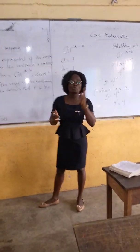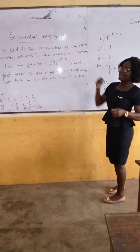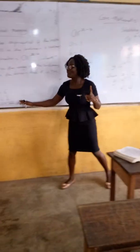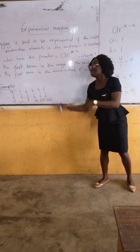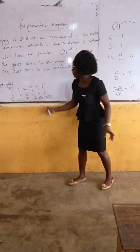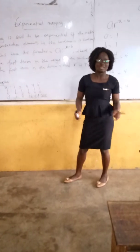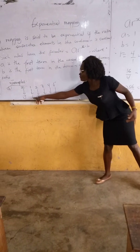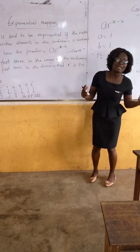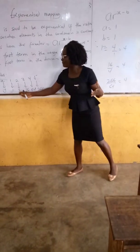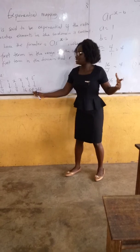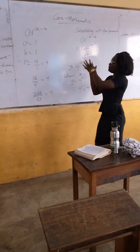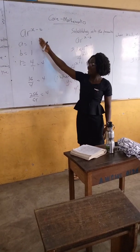Whenever you're given an exponential mapping, use the formula ar^(x-b). To identify it as exponential, check the co-domain: if the differences are not constant, it's not linear — it's exponential. Then apply the formula, where A is the first term in the co-domain, B is the first term in the domain, and R is the constant ratio found by dividing any consecutive co-domain value by the one before it. When you get a constant ratio, substitute back into the formula ar^(x-b).